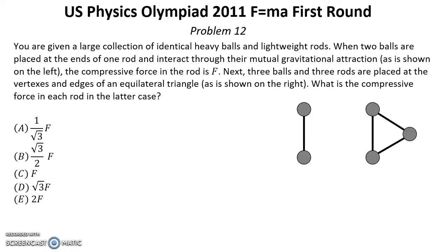Problem number twelve. Solution for this problem you can find by reference below this video in the description. You are given a large collection of identical heavy balls and lightweight rods. When two balls are placed at the ends of one rod and interact through the mutual gravitational attraction as is shown on the left, the compressive force in the rod is F. Next three balls and three rods are placed at the vertices and edges of an equilateral triangle as shown on the right. What is the compressive force in each rod in the later case?